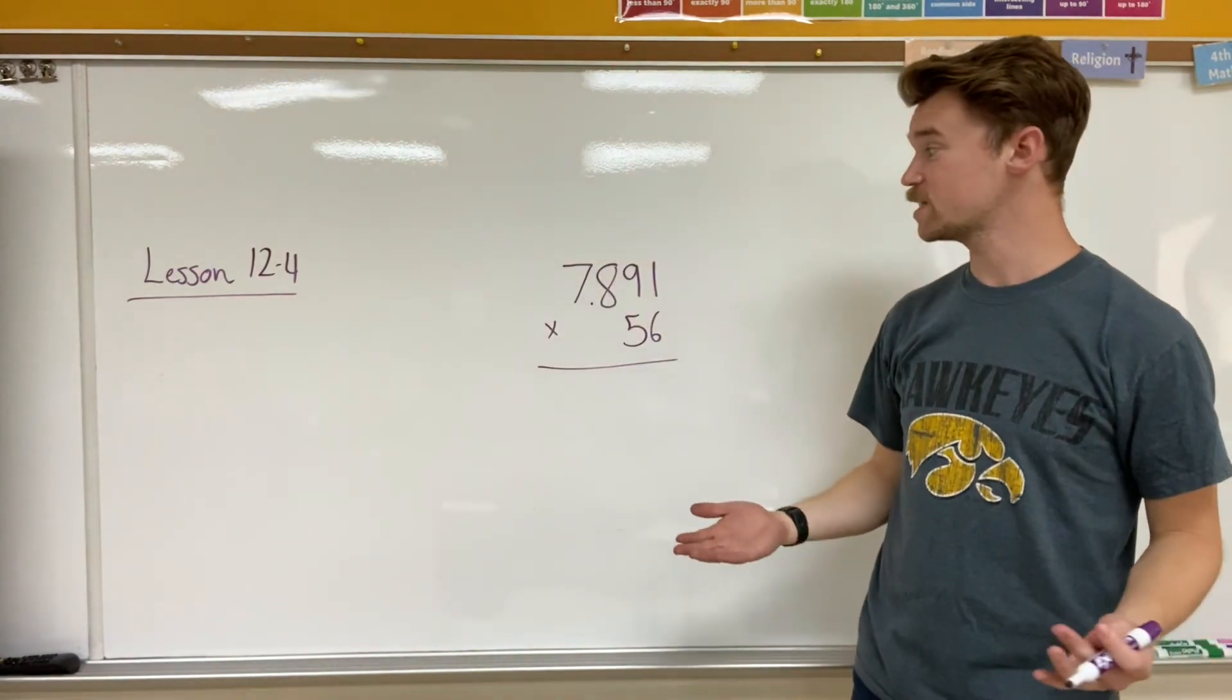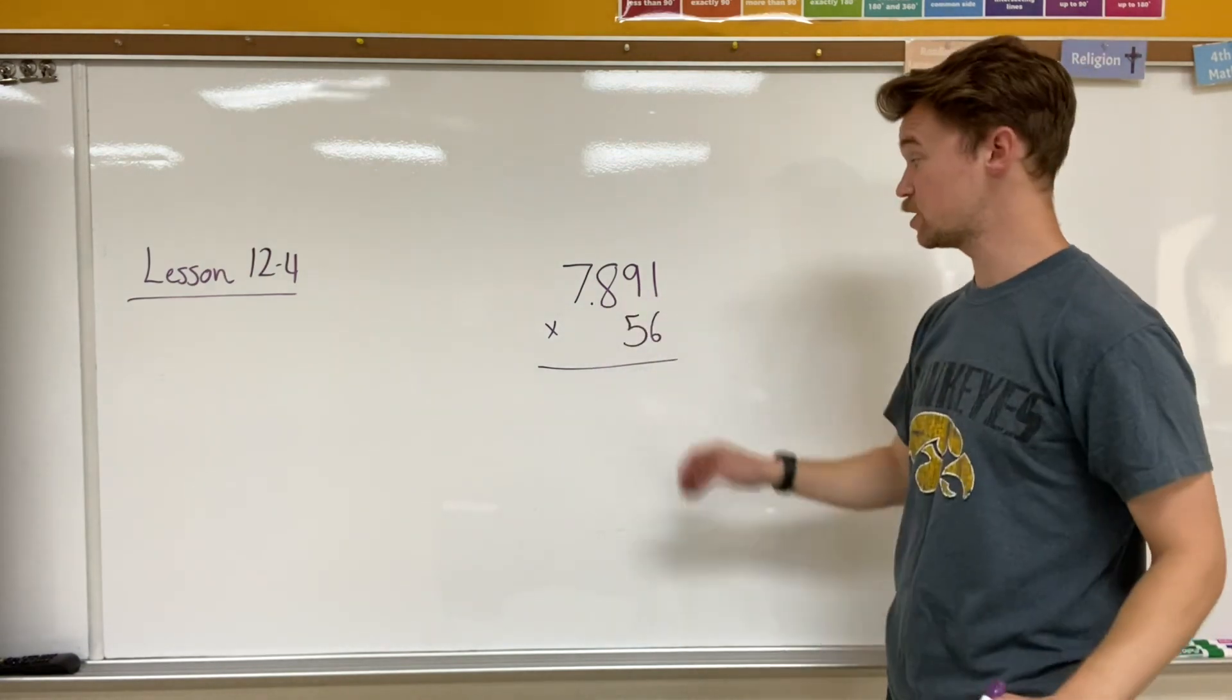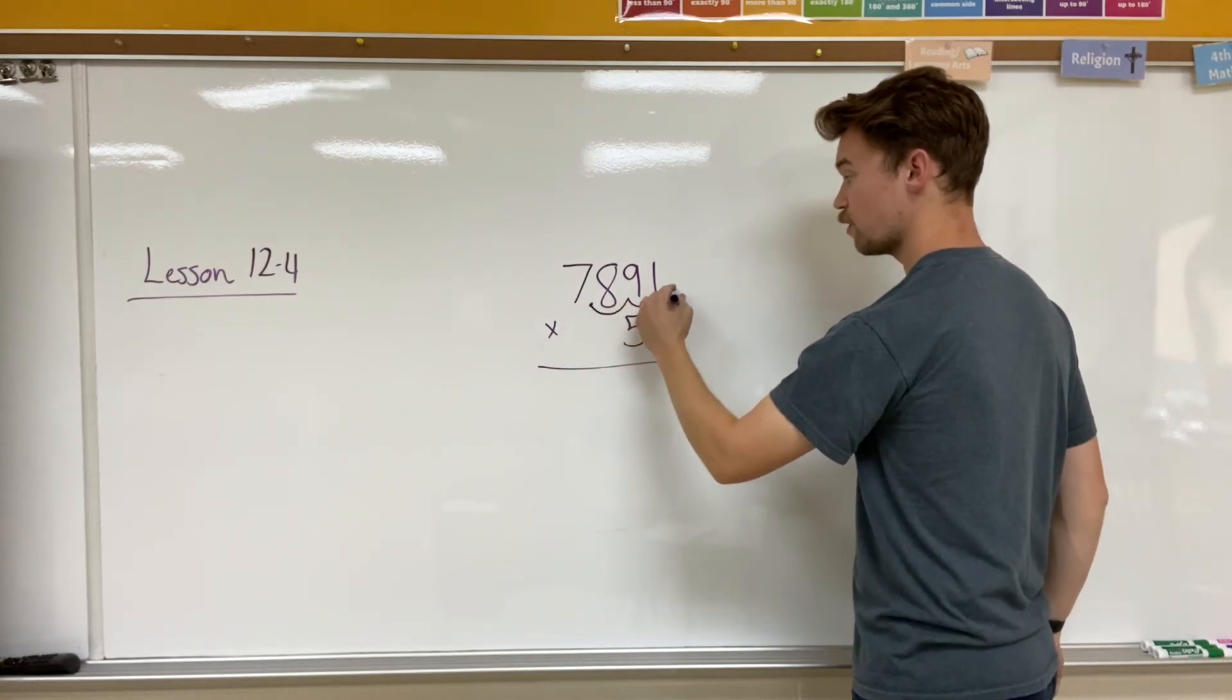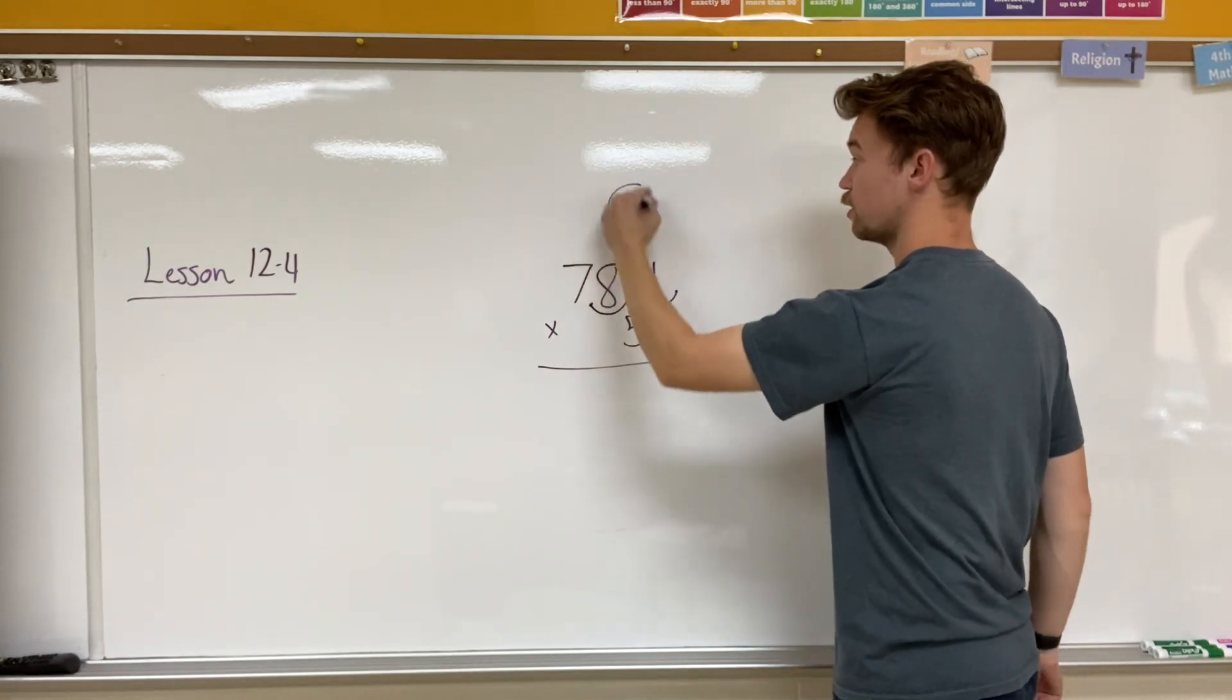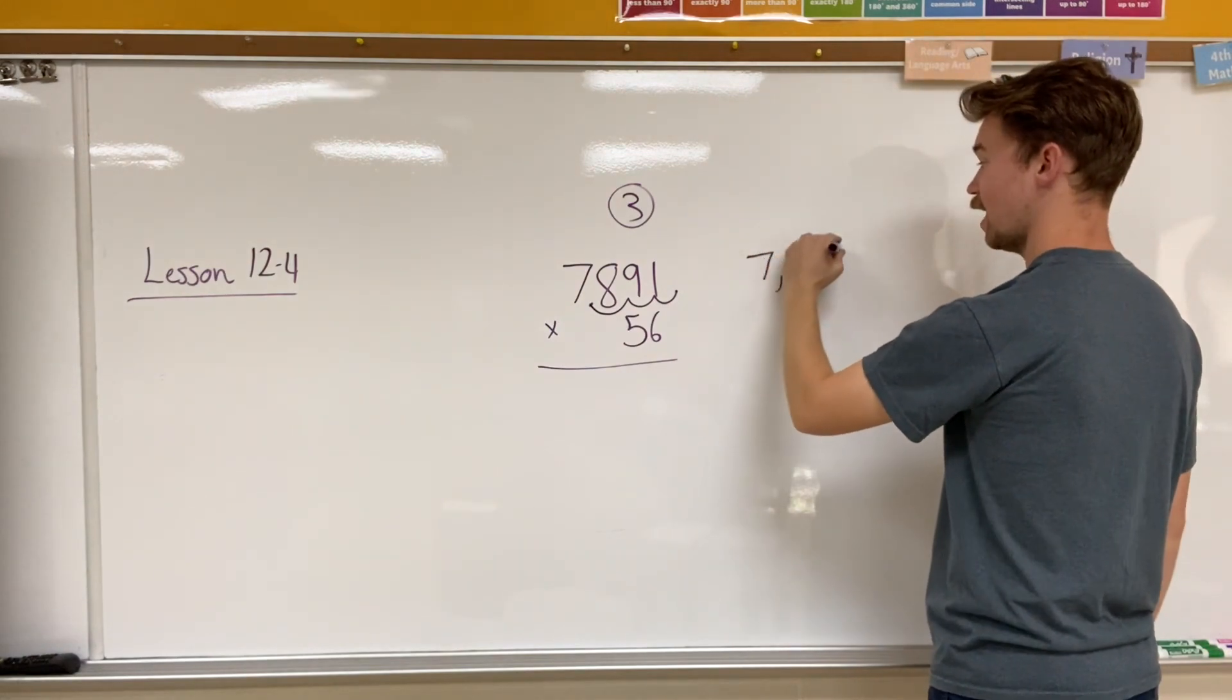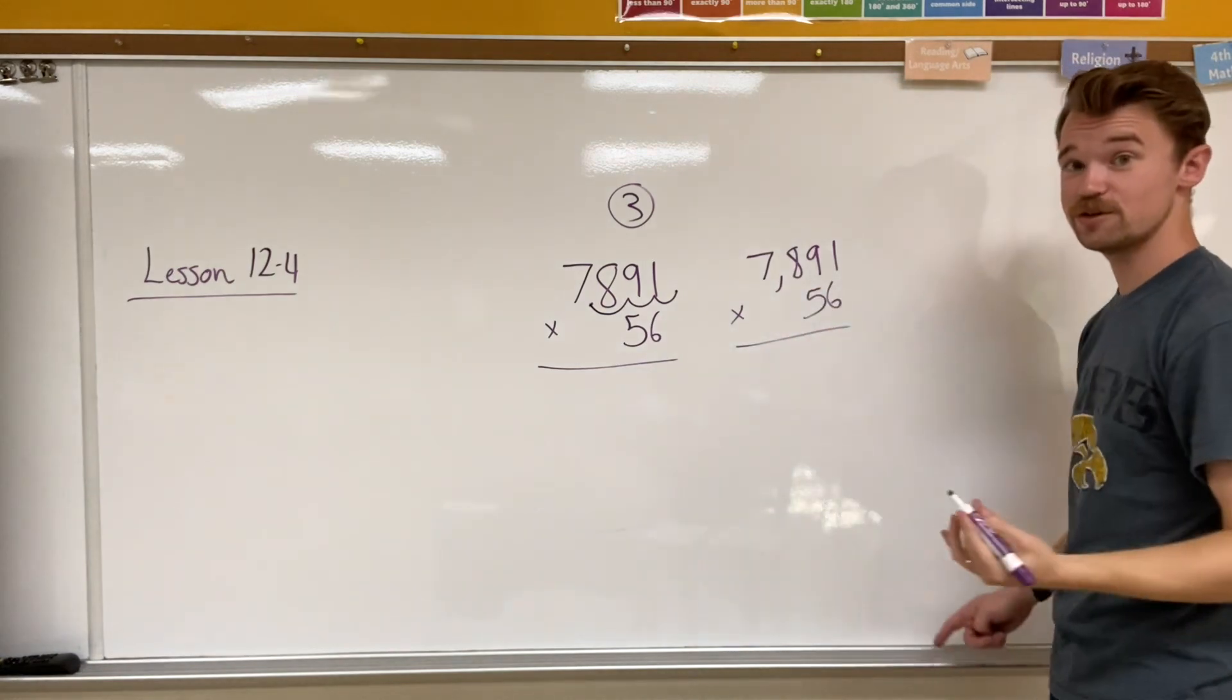And let's do one last example where we go to the thousands place. So I have 7 and 891 thousandths times 56. You know the drill. We need to move the decimal place over to the end. But we move it three spaces. So I'm going to put a 3 right here. Now I have essentially 7,891 times 56. And I can do this if I just take my time.